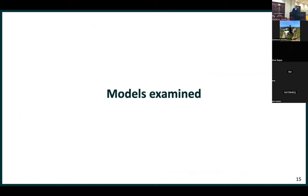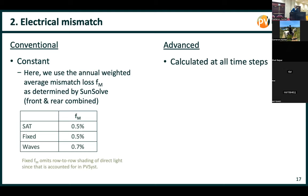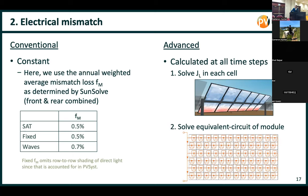Now let's run through those eight models, going through them in order of importance for this site. First: albedo. It's conventional to assume an albedo that's constant with wavelength. In the advanced case, we can take into account wavelength dependence — we've chosen a relatively high albedo here to emphasise differences. For electrical mismatch, it's conventionally assumed to be constant throughout the year. With ray tracing, we can instead calculate the current in every cell, and when we solve the SPICE model for that module — taking into account the current in every single cell and the bypass diodes — we can calculate the electrical mismatch at every point throughout the year.